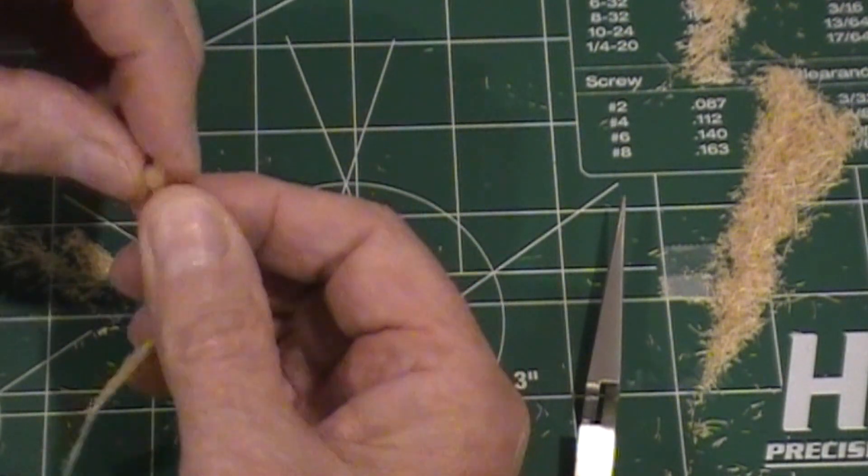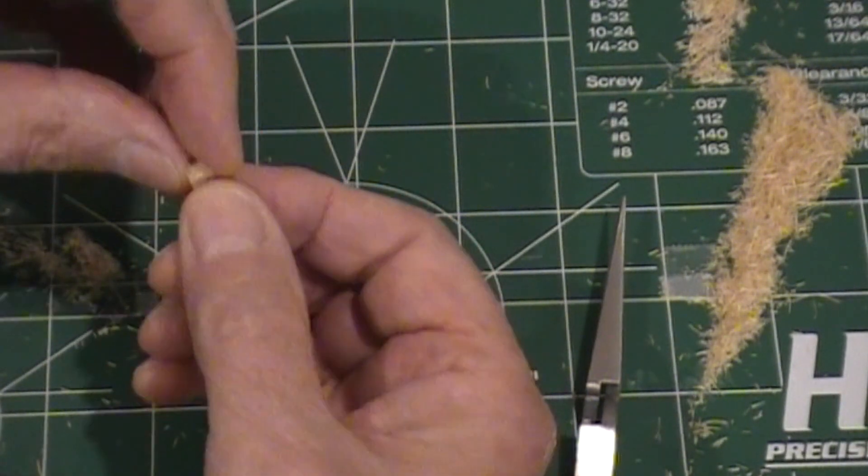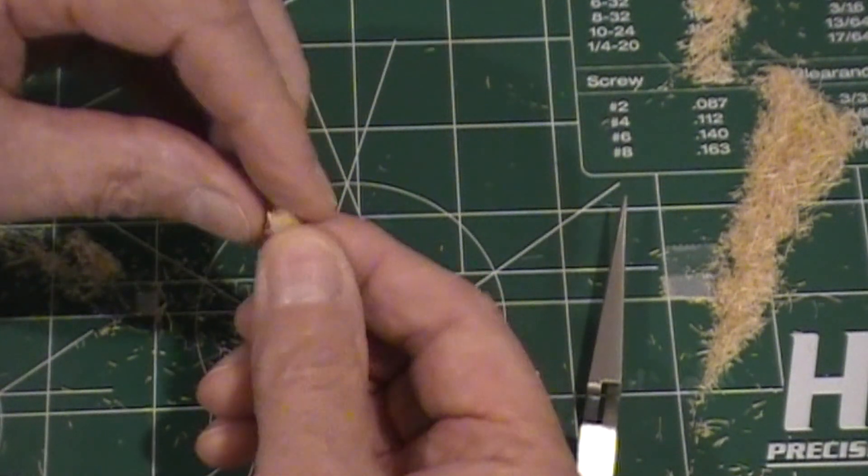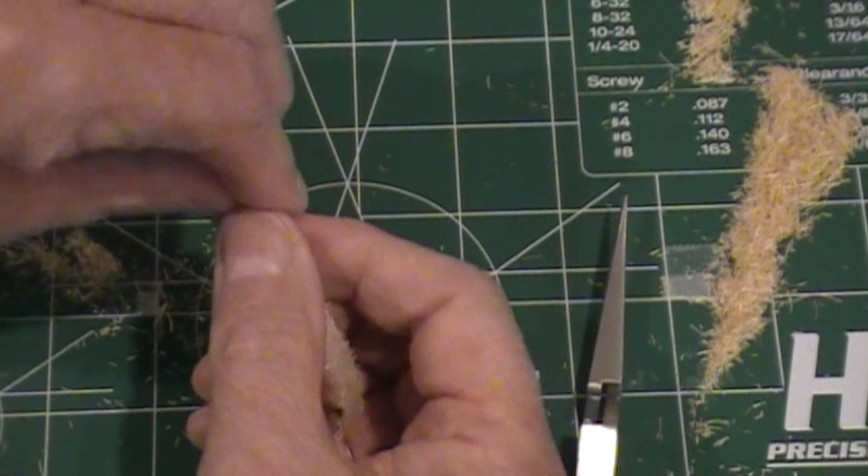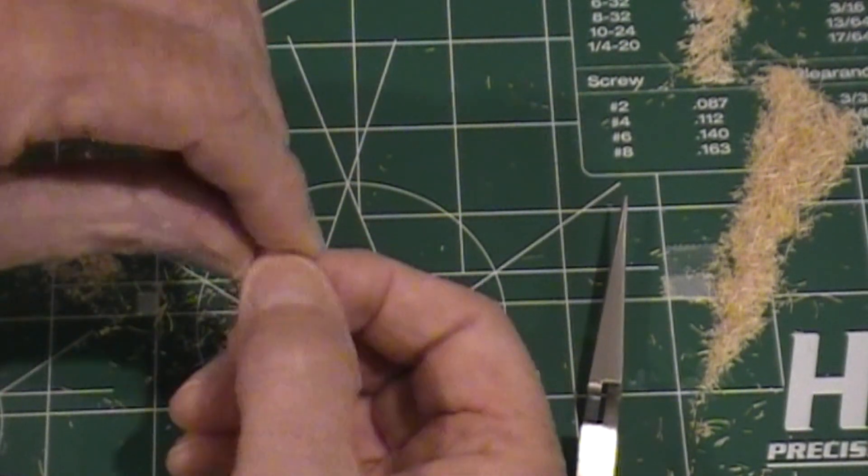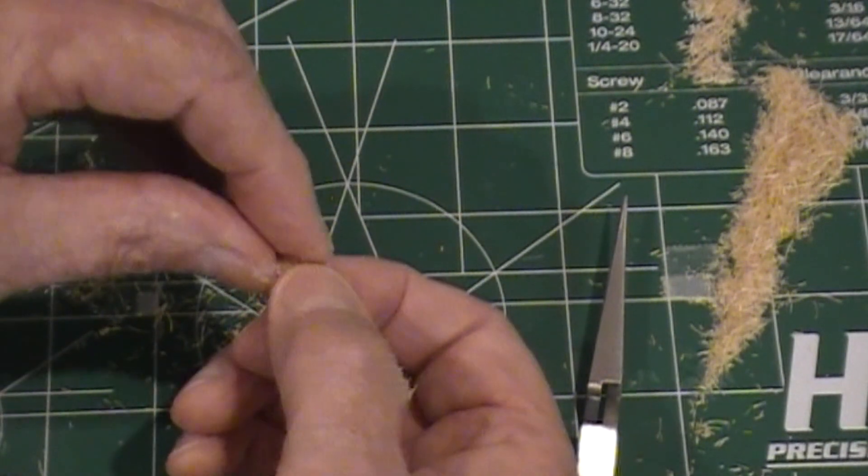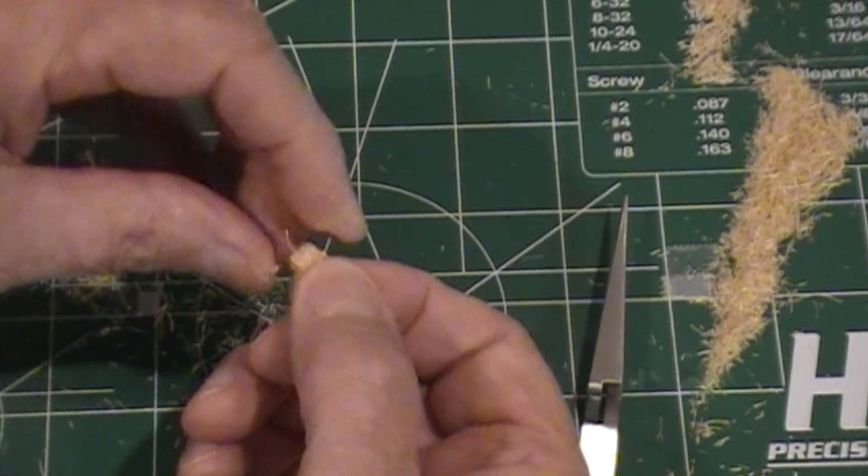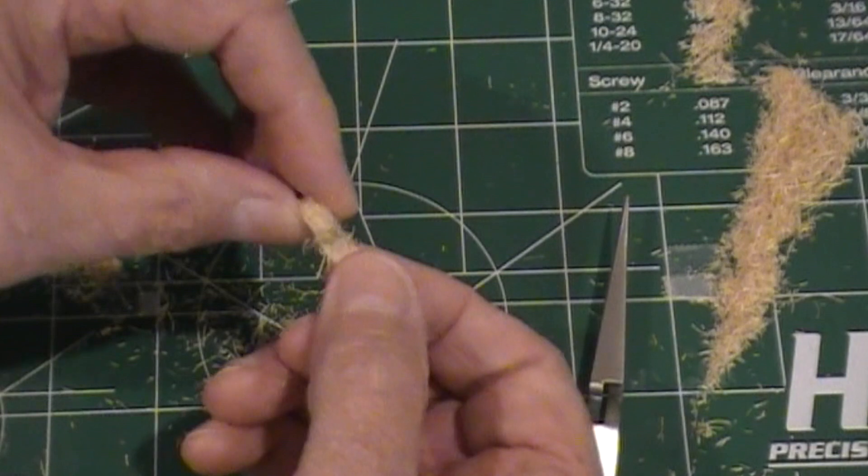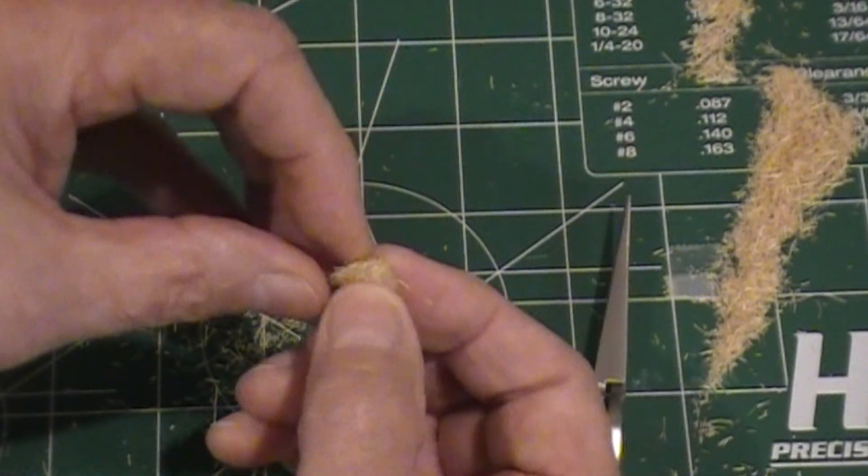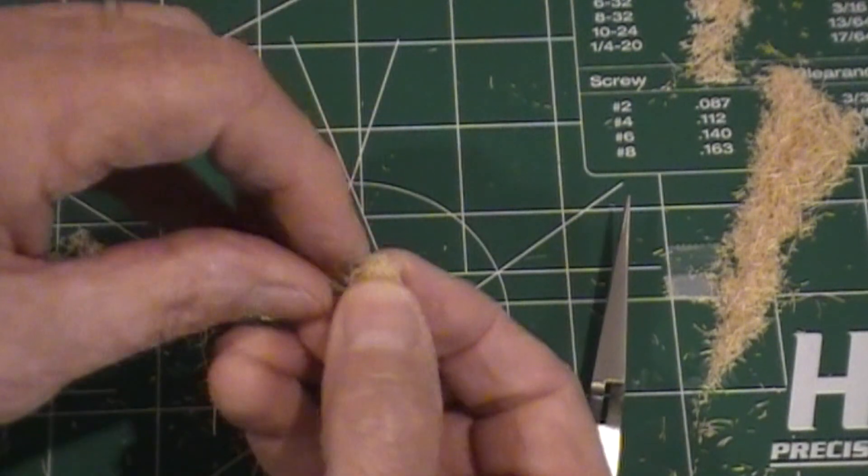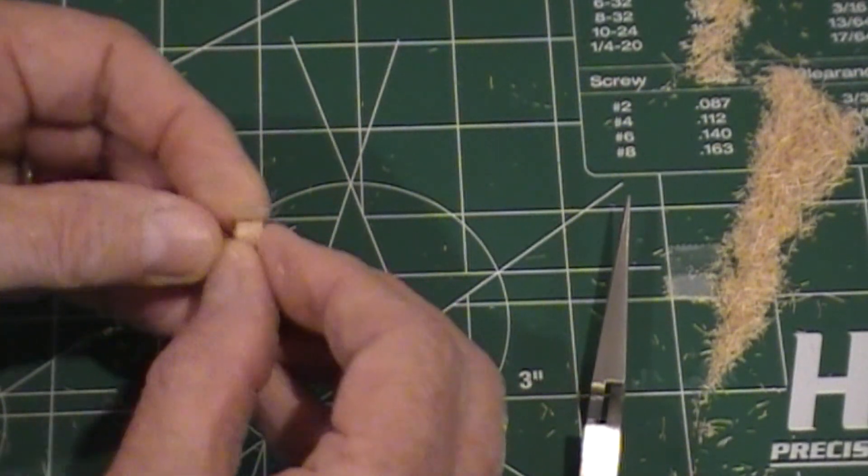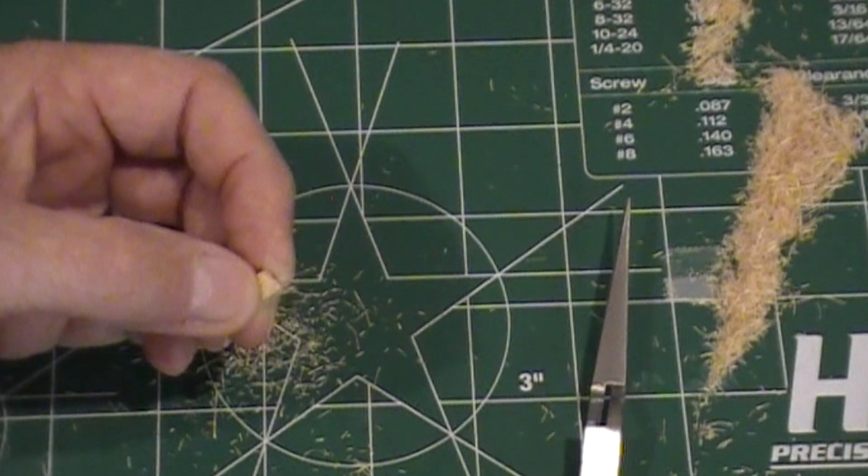And some of the jute is going to fall off. Keep rolling that, keep rolling that. And once we get that fairly tight there...